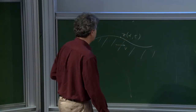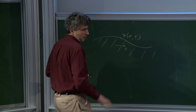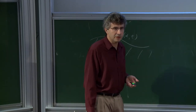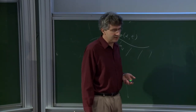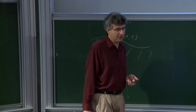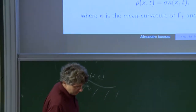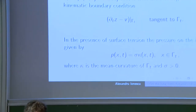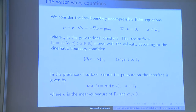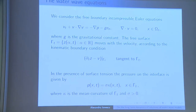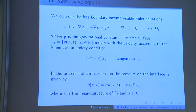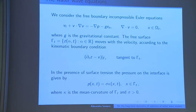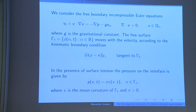Inside the fluid, we're looking at the free boundary incompressible Euler equations. Inside the fluid, we have the Euler equations: the material derivative of V equals minus gradient of the pressure, and we also have the gravity term minus G times the unit vector pointing down.